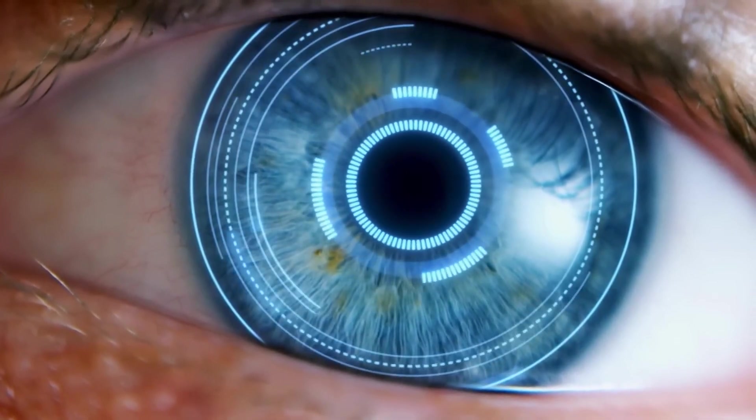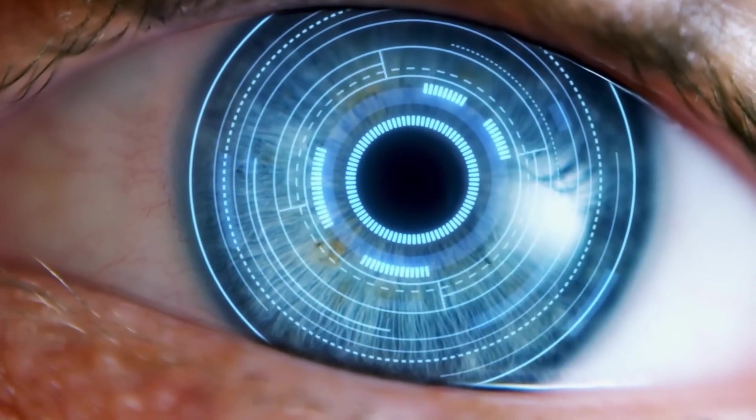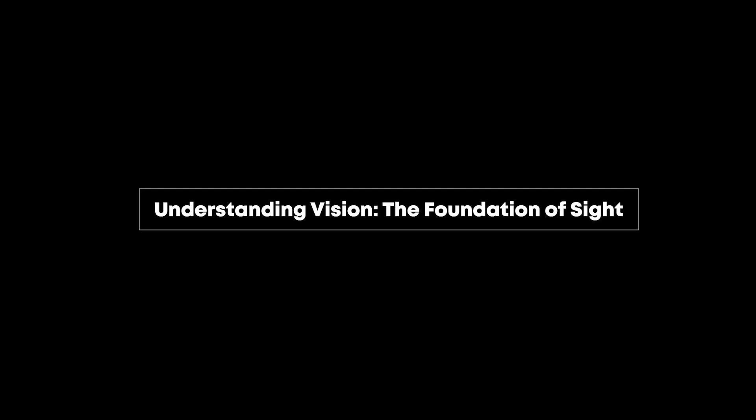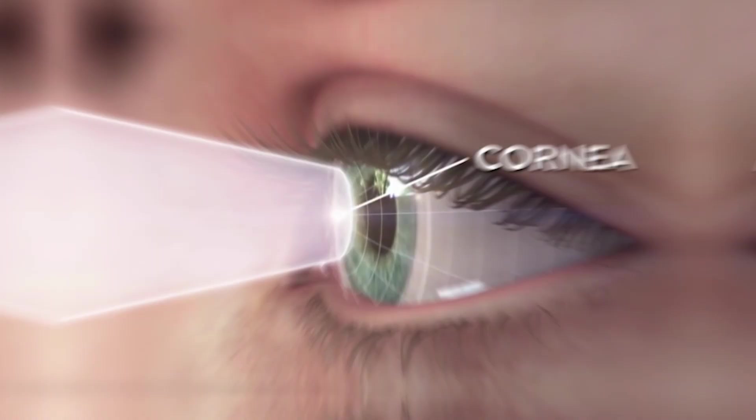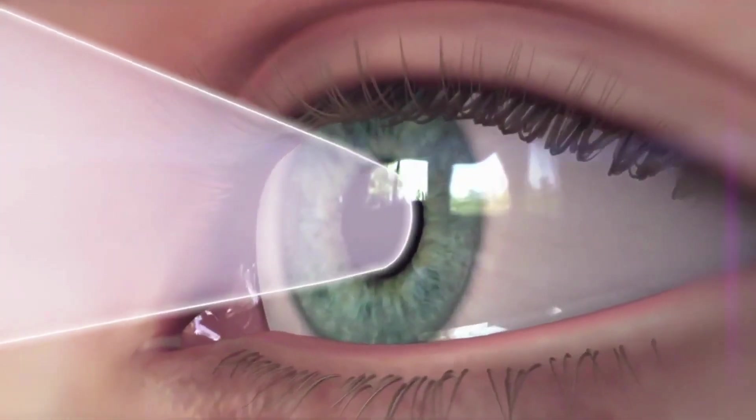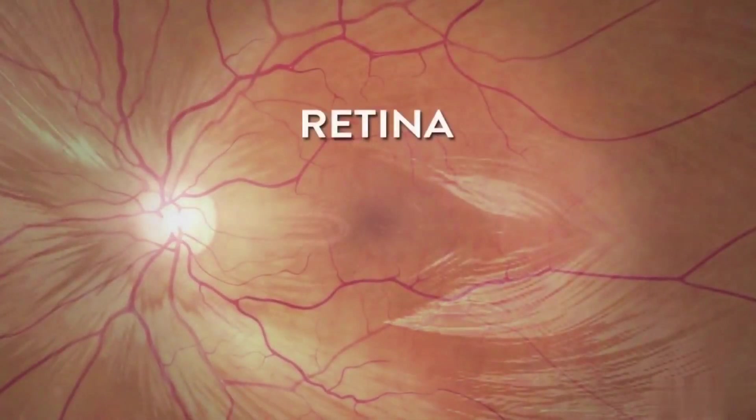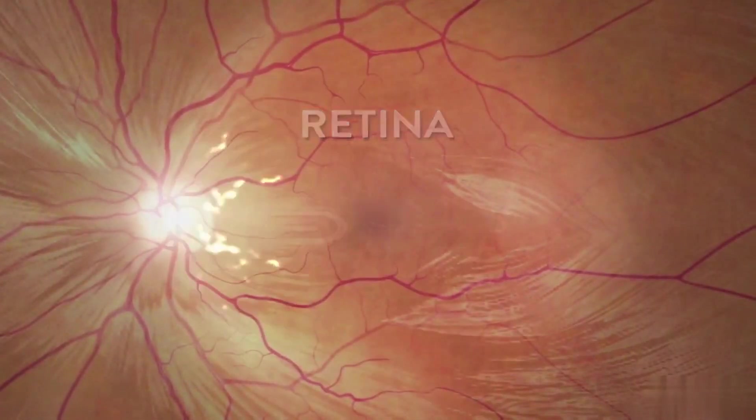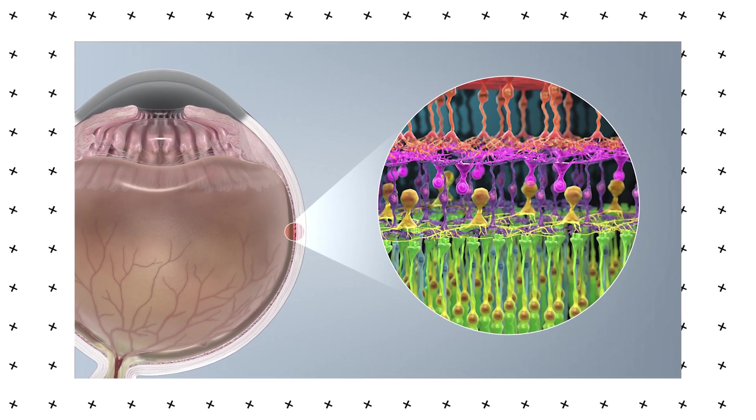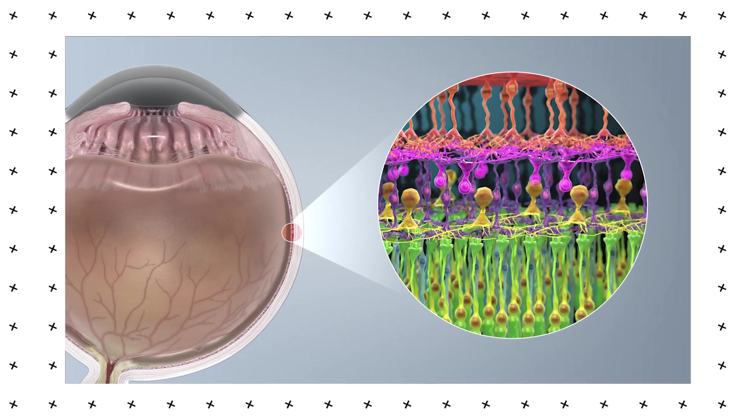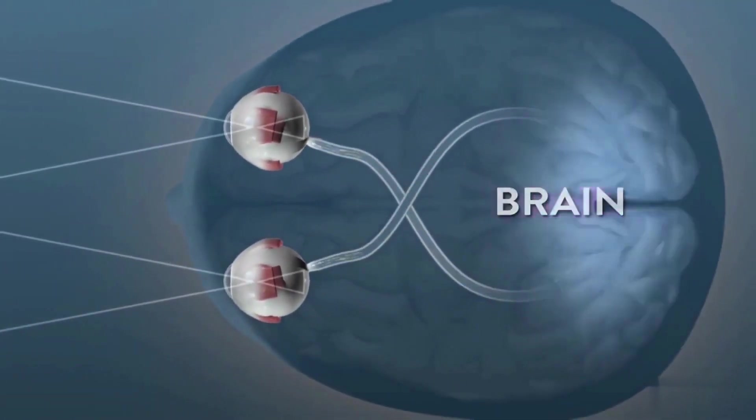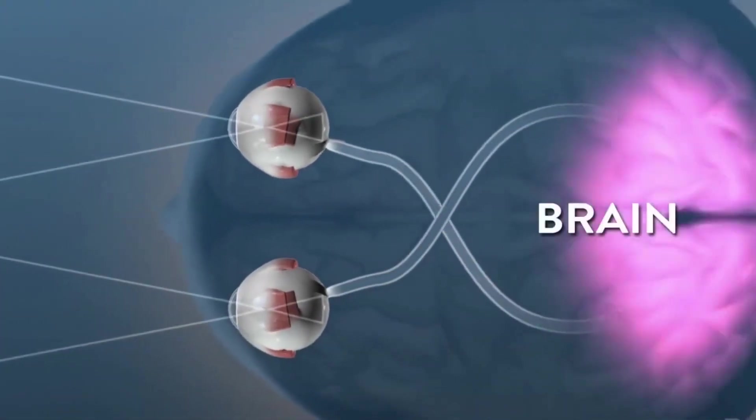Before we can grasp how Neuralink plans to restore vision, we need to understand how our eyes and brain work together to create sight. Our eyes are essentially biological cameras. When light enters our eyes, it's focused by the lens onto the retina, a layer of tissue at the back of the eye. The retina contains special cells called photoreceptors that convert light into electrical signals. These signals then travel through the optic nerve to the visual cortex in our brain.